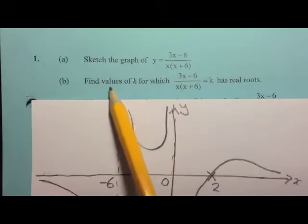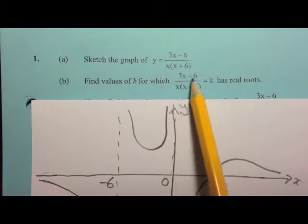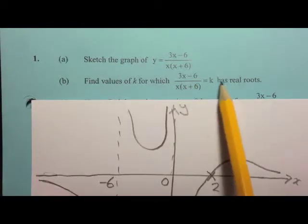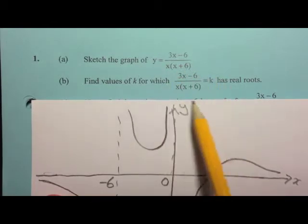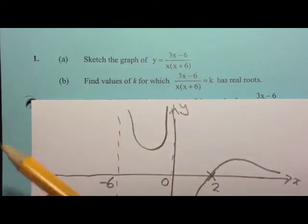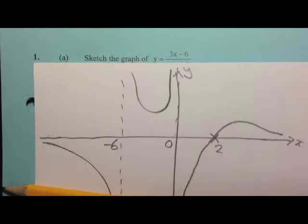Part B: Find the values for k for which 3x minus 6 over x brackets x plus 6 equals k has real roots. So we're finding real solutions to this equation, effectively finding the values of k such that...